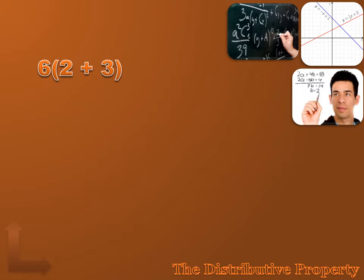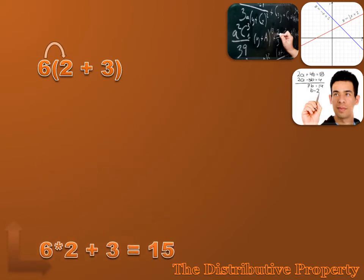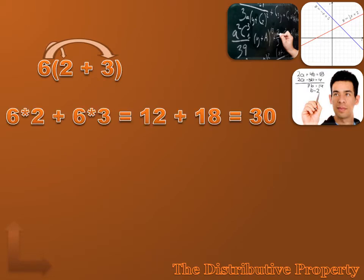So we're going to talk about distribution right now, and we're going to start with this expression: six times the expression two plus three. The six needs to be multiplied by everything inside those parentheses — six times two, also six times three. If you didn't distribute properly, you'd get the wrong answer. You need to distribute that six to both the two and the three, and then it becomes six times two plus six times three, which does equal 30.